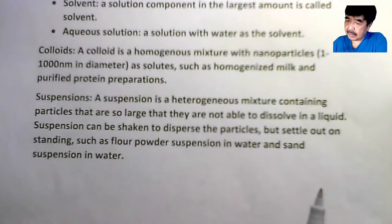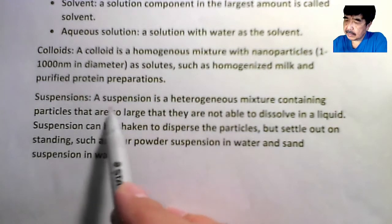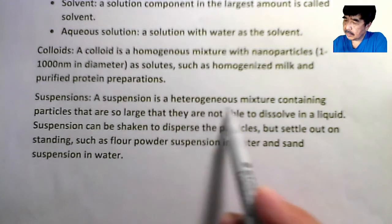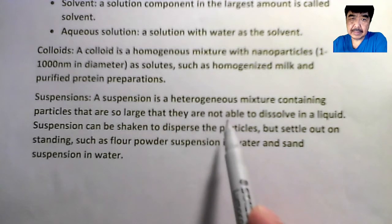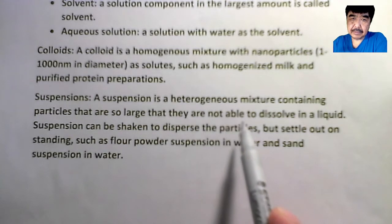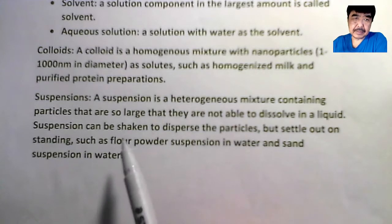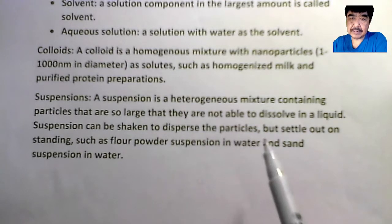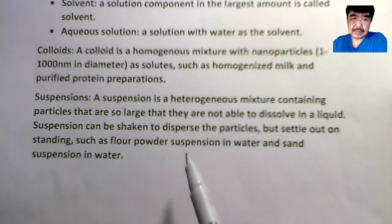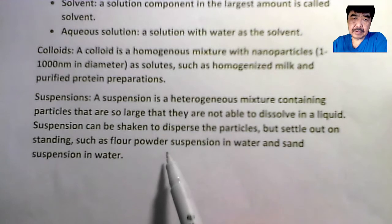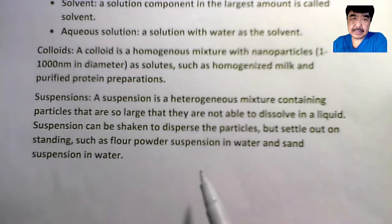The last type of mixture is called suspension. Suspension is a heterogeneous mixture containing particles that are so large that they cannot dissolve in a liquid. Suspension can be shaken to disperse the particles but they settle out on standing, such as flour powder suspension in water and sand suspension in water.